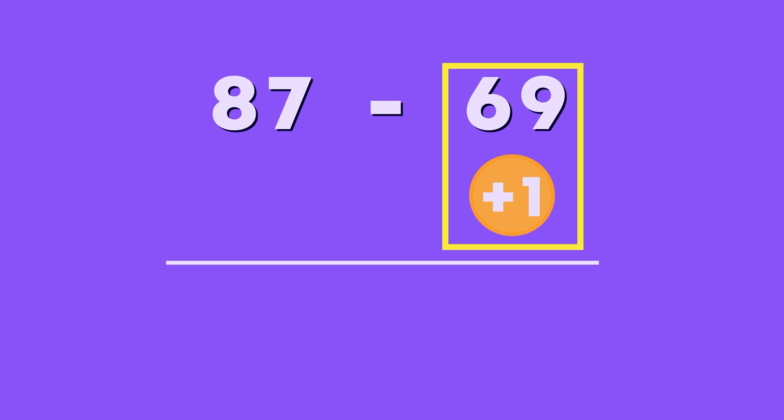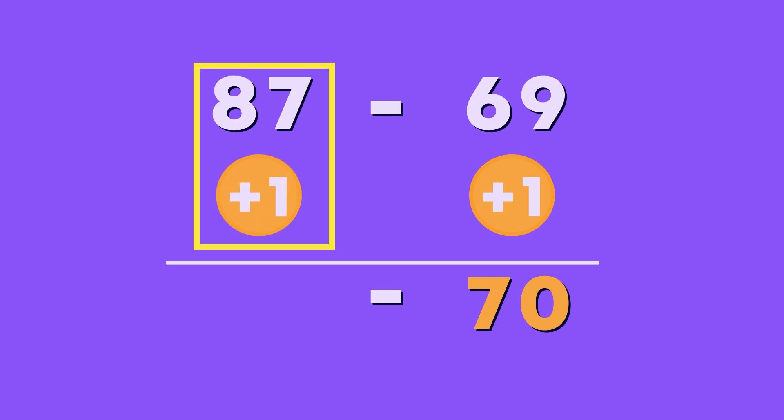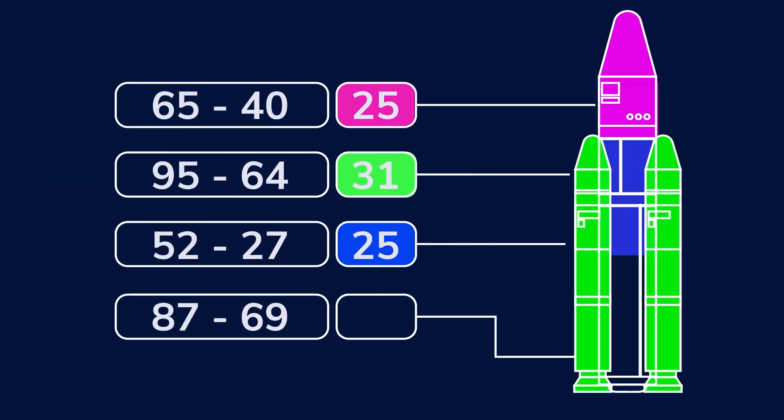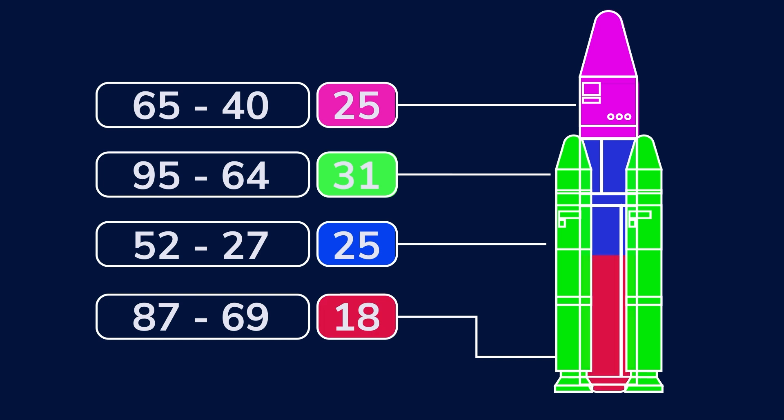69 plus 1 is 70. Now we need to bump the other number by the same amount. What is 87 plus 1? It's 88. Super! Our sum is now 88 minus 70. What is the answer? 18! 87 minus 69 equals 18. Well done! The code is 18.